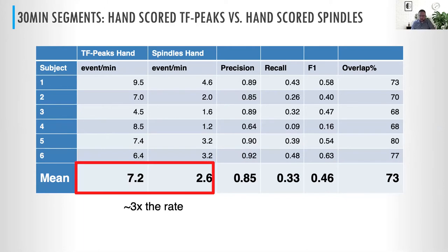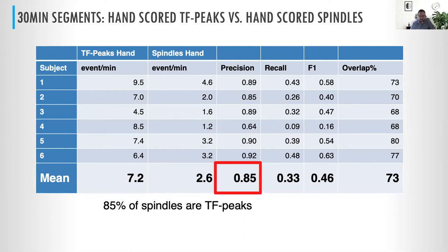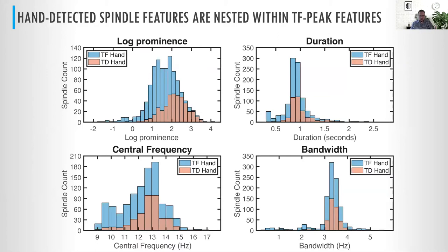The first thing we saw was about two to three times the rate of time-frequency peaks scored by hand compared to spindles scored by hand. But what was interesting is that essentially 85% of the spindles scored by hand were also a time-frequency peak. When we look at the actual morphological properties, the blue distributions are TF peaks and the salmon color is traditionally scored spindles. In anything other than prominence — the intensity of the blob — everything nests within each other, with nearly identical distributions except that we get more at lower frequency and lower amplitude.